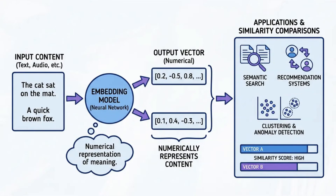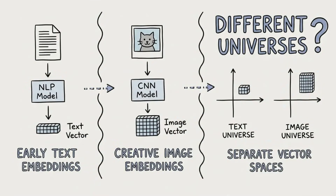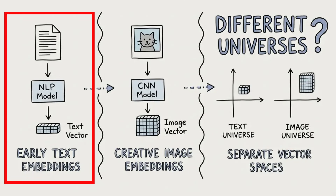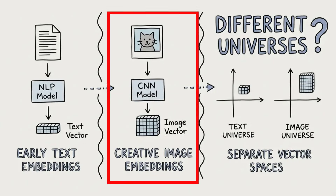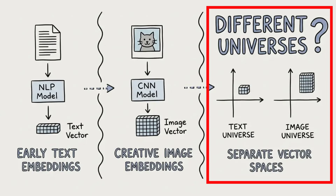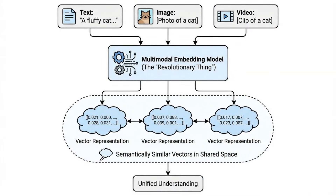We can use something like cosine distance or another distance metric to look at two vectors and see how close together they actually are. Traditionally this was all done with text — embeddings were created mostly for turning text into vector representations, and images had their own separate vector representations. But text and images lived in totally different universes; they didn't share the same vector space.